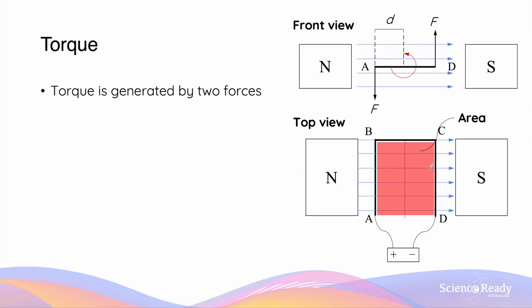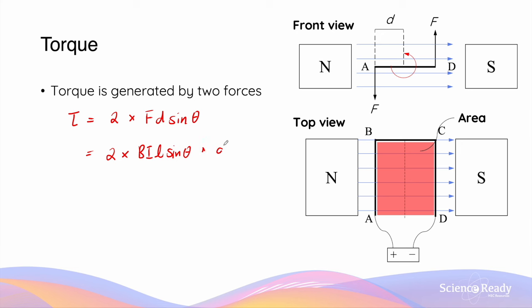When we have a simple DC motor setup, we have two forces that work together to produce the same torque. We have a force vector acting on side AB going downwards, and a force vector acting on side CD going upwards. They act on opposite sides and in opposite directions, but both produce anti-clockwise rotation and the same direction of torque.